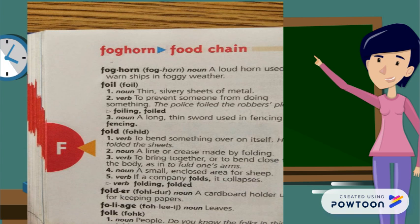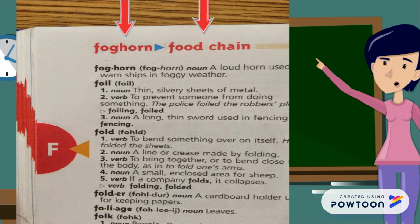At the top of the page are what are called guide words. Guide words, in this case foghorn and food chain, show which words are on the page. You will have words starting from foghorn going to food chain in alphabetical order.